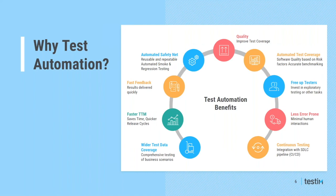What are some of the benefits of test automation? It provides an automated safety net before you promote your software to production through automated smoke and regression testing. It provides faster results back to testers and developers for quick resolution of issues. You can test with more data scenarios, have the flexibility to do risk-based testing, and free up manual testers to do exploratory testing. You can also tie automated tests with your CI/CD processes to achieve continuous testing.